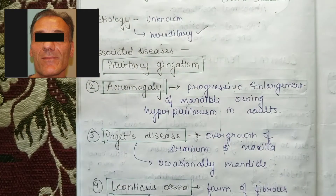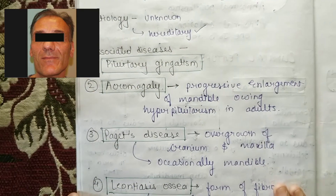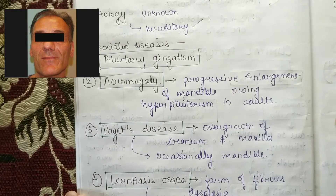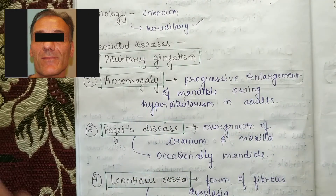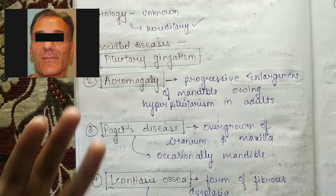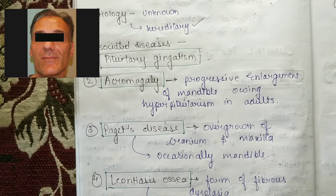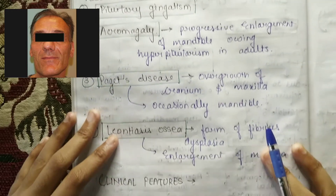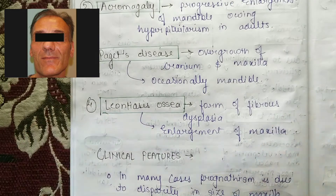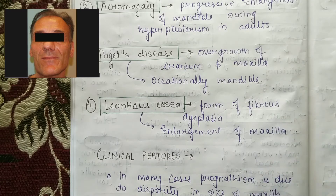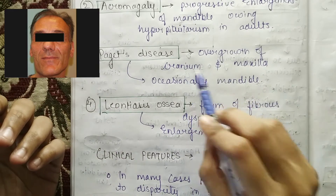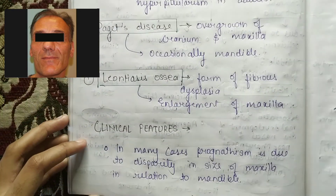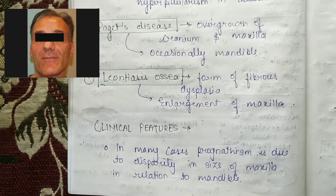Coming to associated diseases: in acromegaly there is progressive enlargement of the mandible due to hyperpituitarism in adults. In Paget's disease and leontiasis ossea, overgrowth of the cranium and maxilla can be seen, and occasionally the mandible as well.